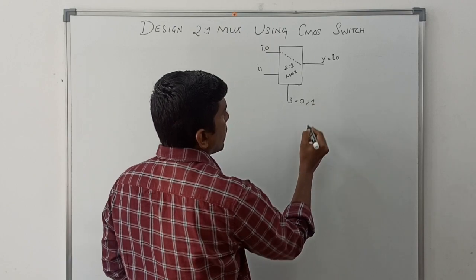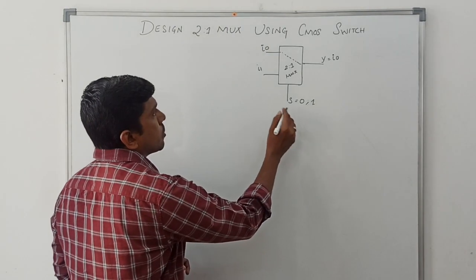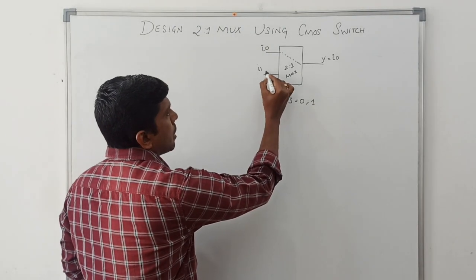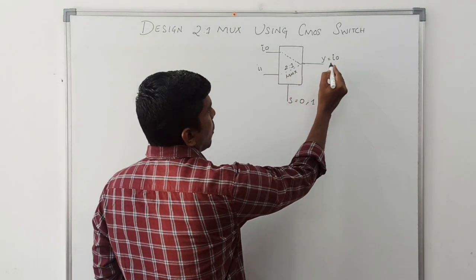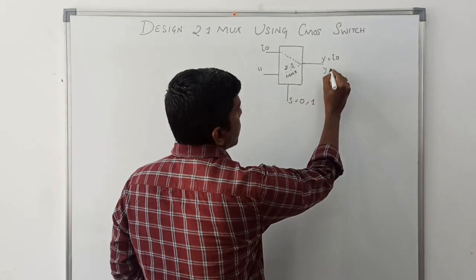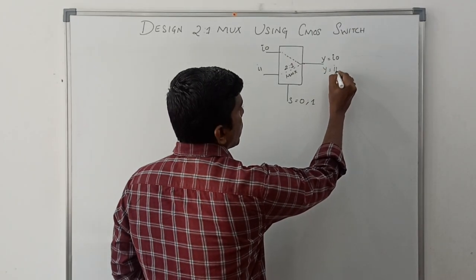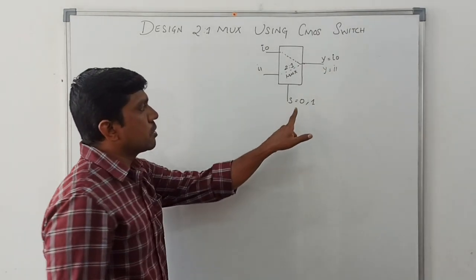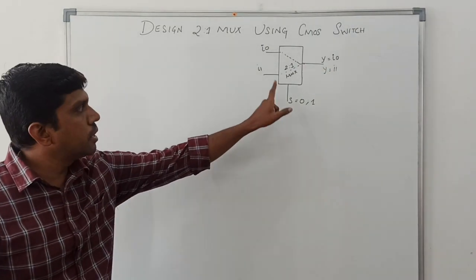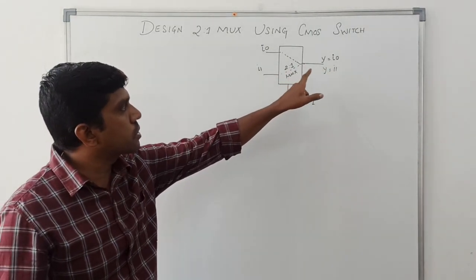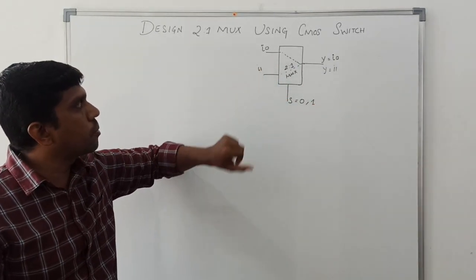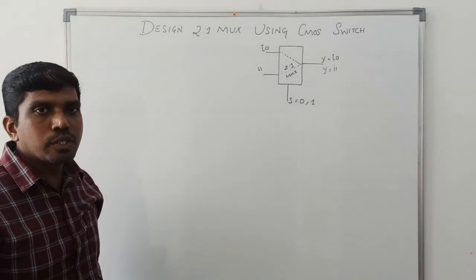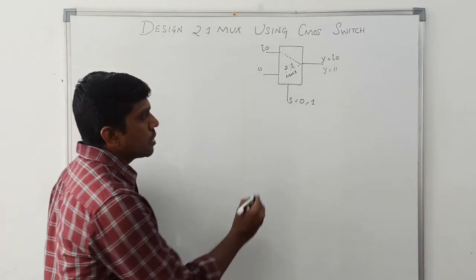Suppose S equals 1; in this case, I1 is connected to the output, so Y equals I1. Based on the selection line, the input value is connected to the output. That is the basic operation of a 2-to-1 mux.